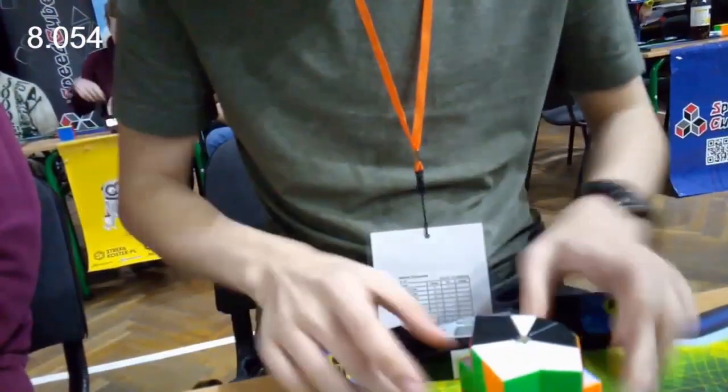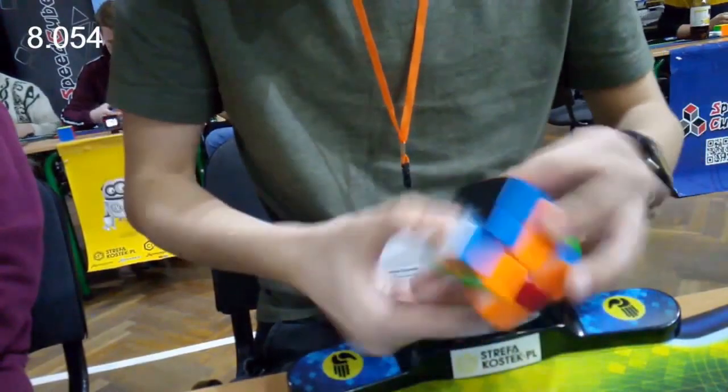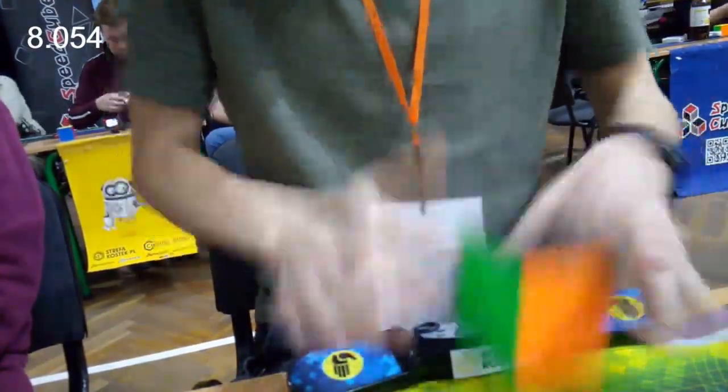Mikau also seems to have pretty average splits, but his EO is extremely fast. Looking at his solves, it isn't really the turning speed that makes him faster at this step, but rather the lack of pausing for this step.